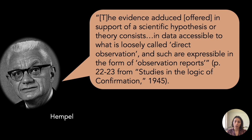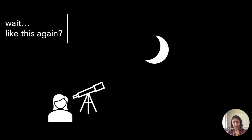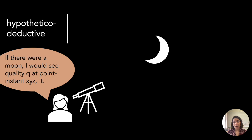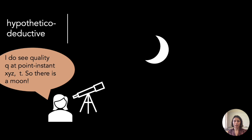For our astronomer, the hypothetical deductive method says: if there were a moon there, she would see some quality Q at spatial location XYZ at time T. It's a bit more precise than fact-gathering but similar in spirit. If she does see quality Q at point-instant XYZ, T, she has confirmed the hypothesis that there exists a moon. So seeing those observational consequences confirms the hypothesis that the moon exists.